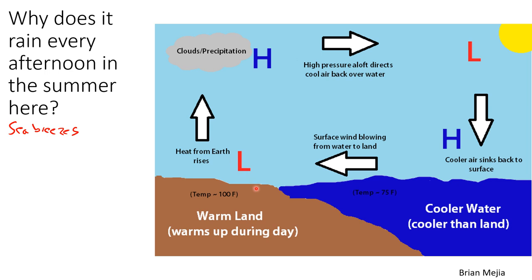That's the sea breeze you feel. As that cool, moist air moves in and gets heated up and rises, that creates clouds. Those clouds cause precipitation and afternoon thunderstorms — a cycle that gets set up. That's what causes afternoon thunderstorms here in central Florida during the summer: this sea breeze effect.